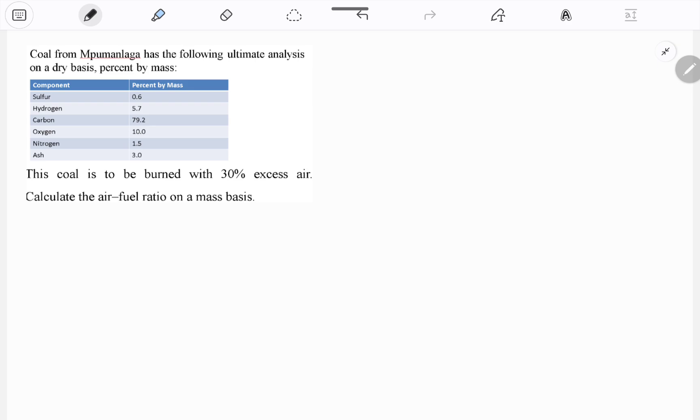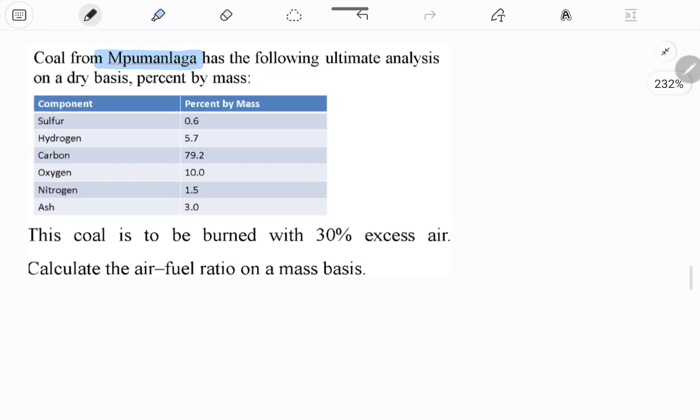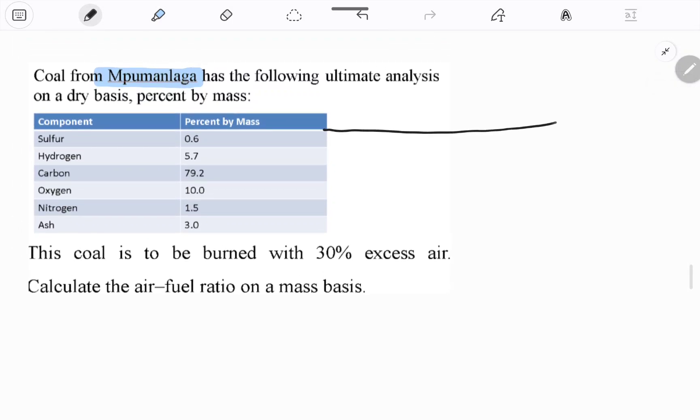Let's try to read what is going on here. The coal from Mpumalanga has these components: sulfur, hydrogen, carbon, oxygen, nitrogen, and ash in these mass proportions.